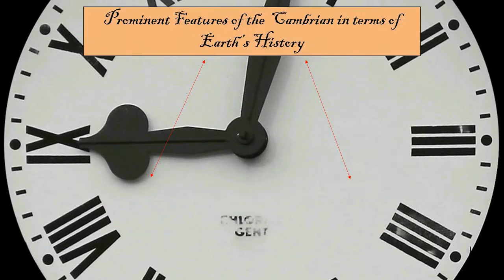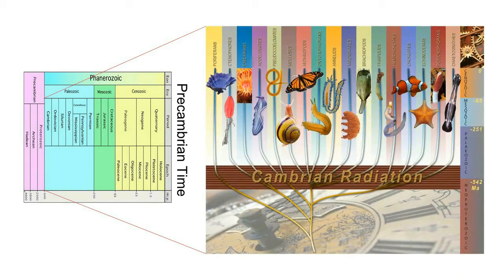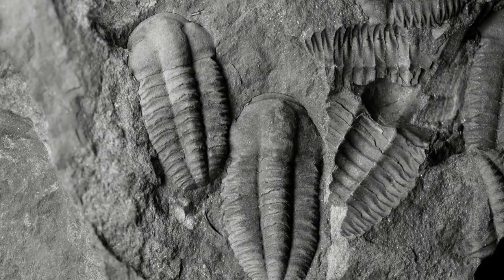Two of the most prominent features of the Cambrian Explosion are time-based: its abruptness and its exceptionality in the history of life. The onset of the Cambrian Explosion is in the Ediacaran, where there is evidence of stem group bilaterian fossils. The trace fossil Treptichnus pedum marks the beginning of the Cambrian, but the precise length of the radiation remains an academic disagreement. The emergence of the first trilobite fossils marked the end of the radiation for some schools, while others believe it extended until after the Cambrian. All major modern phyla, with the exception of the bryozoa, appear in the fossil record in the early Cambrian, but there is a lack of fossils unambiguously assignable to the most basal stem groups of these phyla.